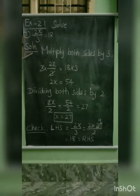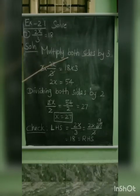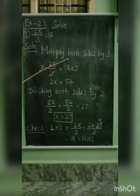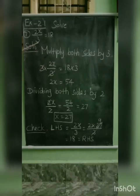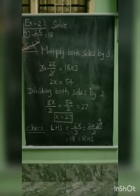Next, the solution. Now, to multiply both sides by 3. On the left hand side, the denominator has 3, so 2x by 3 multiplied by 3 — the denominator 3 will cancel out.